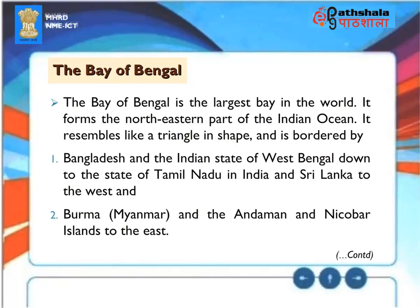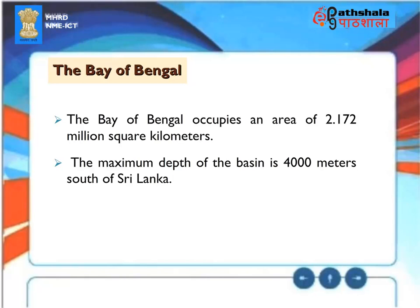The Bay of Bengal is the largest bay in the world. It forms the northeastern part of the Indian Ocean, resembling a triangle in shape. It is bordered by Bangladesh and the Indian states of West Bengal to Tamil Nadu, Sri Lanka to the west, and Burma or Myanmar and the Andaman and Nicobar Islands to the east. The Bay of Bengal occupies an area of 2.172 million square kilometers. The maximum depth of the basin is 4,000 meters south of Sri Lanka.